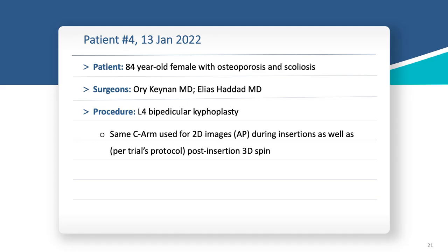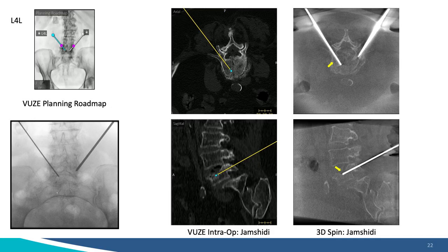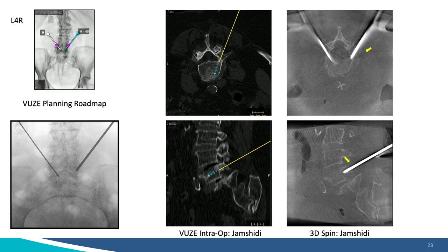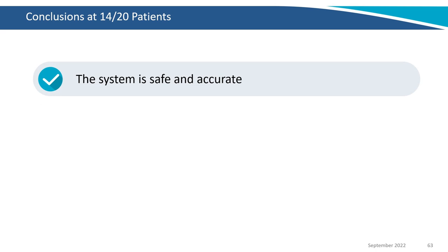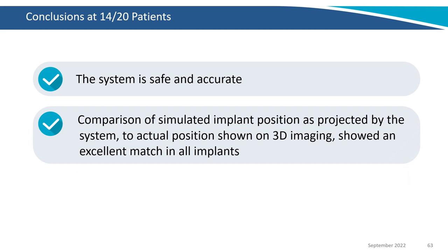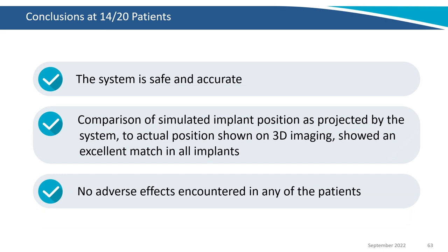For kyphoplasty, we simulate the position of the K-wire, verify it's correct, and inject the cement. In conclusion so far: 14 patients enrolled, 44 screws, 7 kyphoplasties. The system is safe and accurate — every time we verify the position, it's exactly as simulated. No adverse events were encountered in any of the patients.